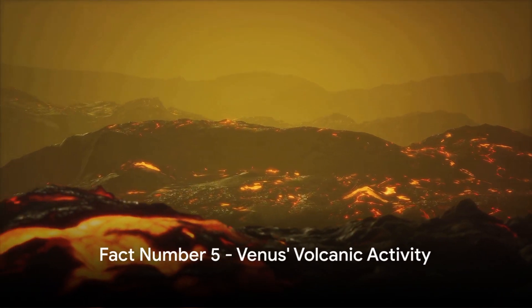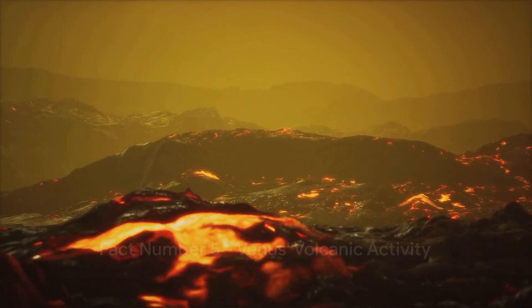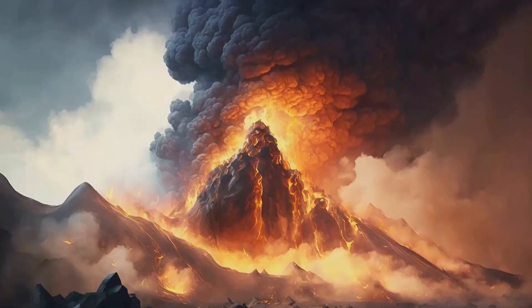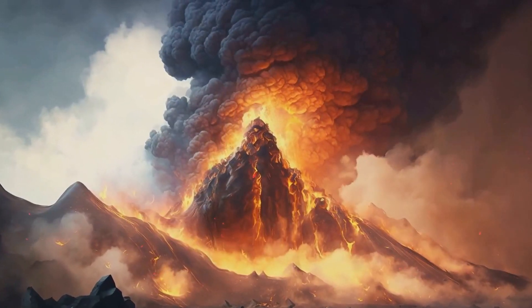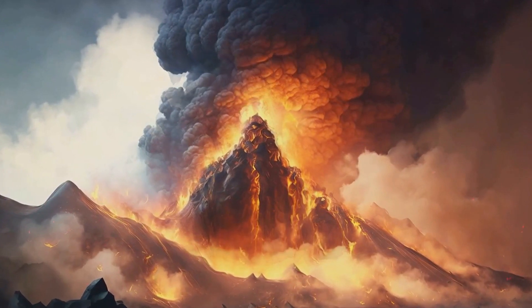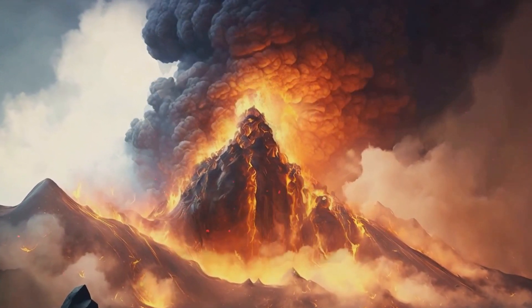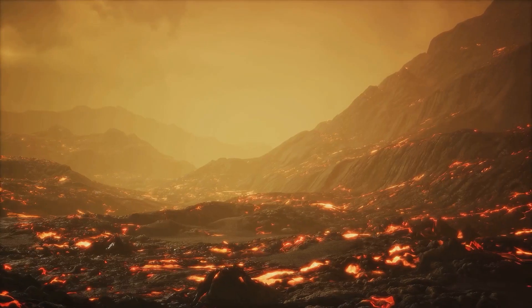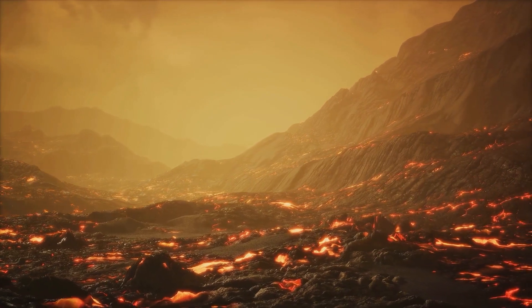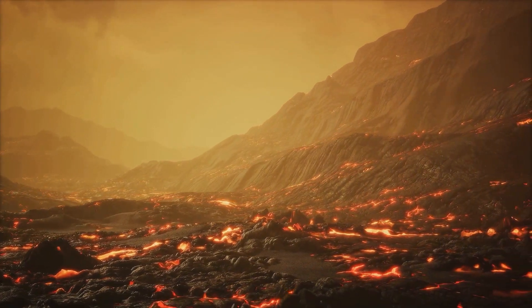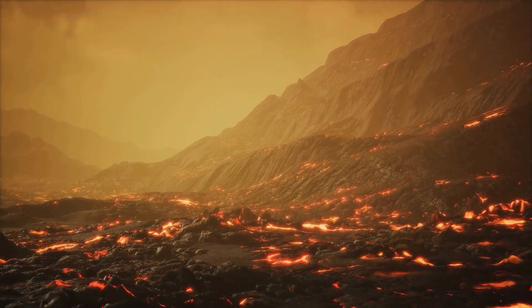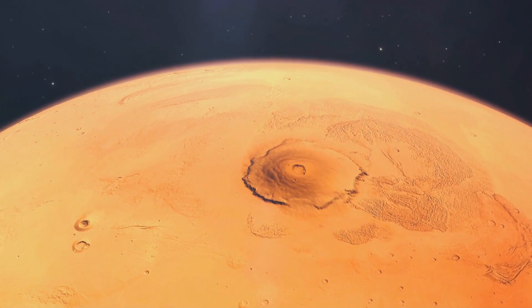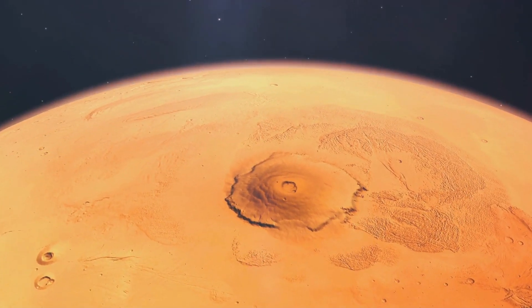At number 5, Venus is home to thousands of volcanoes. This simmering planet boasts more volcanoes than any other in our solar system. It's estimated that Venus hosts between 100,000 to 1 million volcanoes. To put that into perspective, Earth, our home, has about 1,500 active volcanoes. The volcanic activity on Venus is not just impressive in quantity, but also in scale. Meet Mott Mons, the highest volcano on Venus, standing at a towering 5 miles high. That's nearly the size of Mount Everest. However, despite the abundance of volcanoes, scientists are unsure if any are currently active.